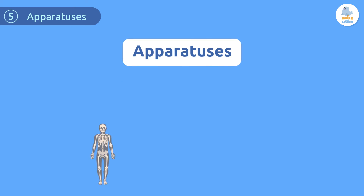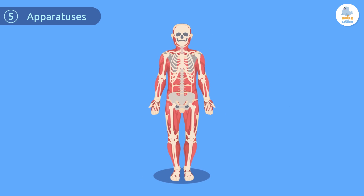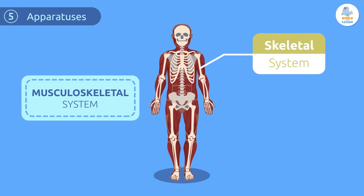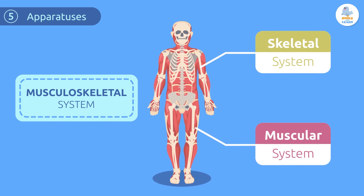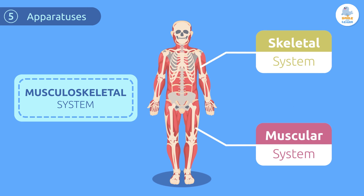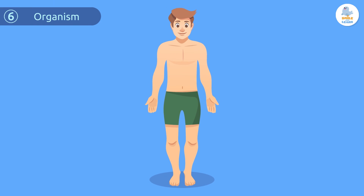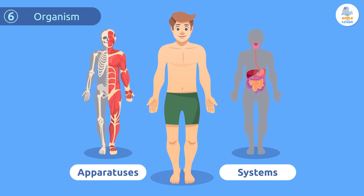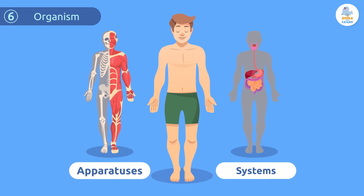The apparatuses are made up of different organs and systems that carry out a function together. For example, the musculoskeletal system consists of the skeletal system and the muscular system. And finally, the organism is made up by the combination of all apparatuses and systems — we are an organism, made up of apparatuses and systems.